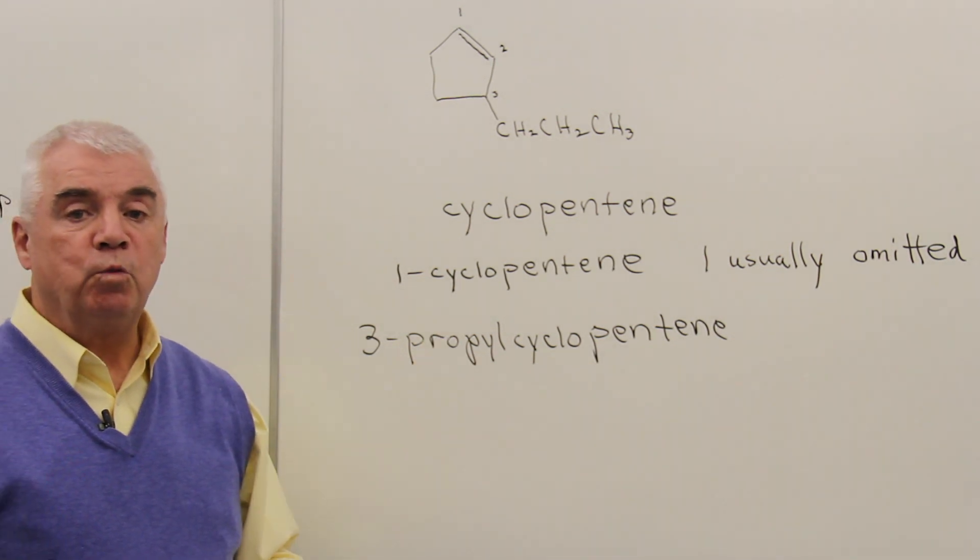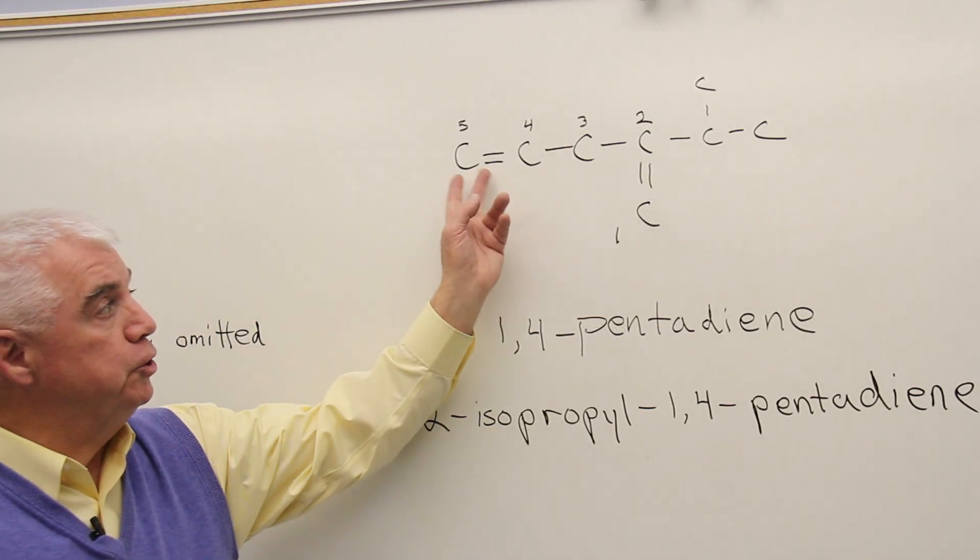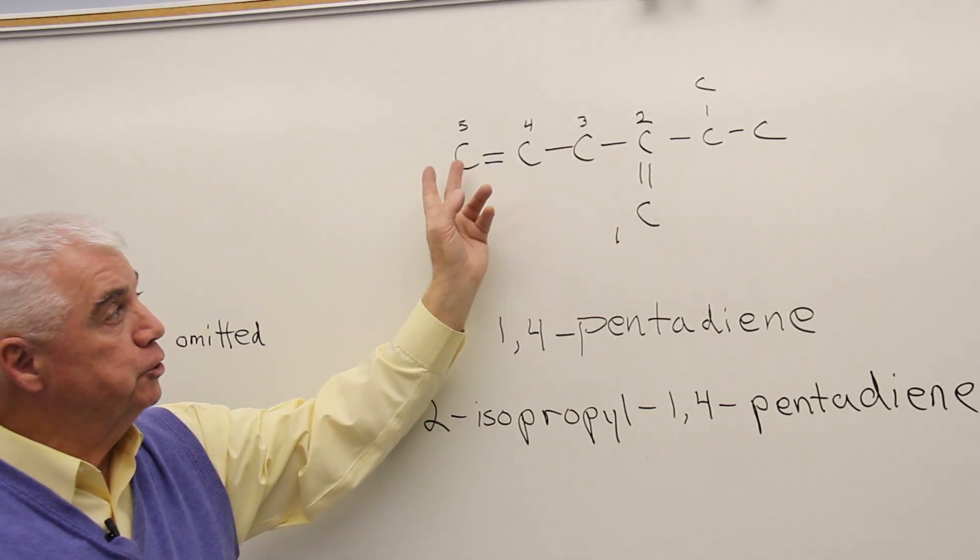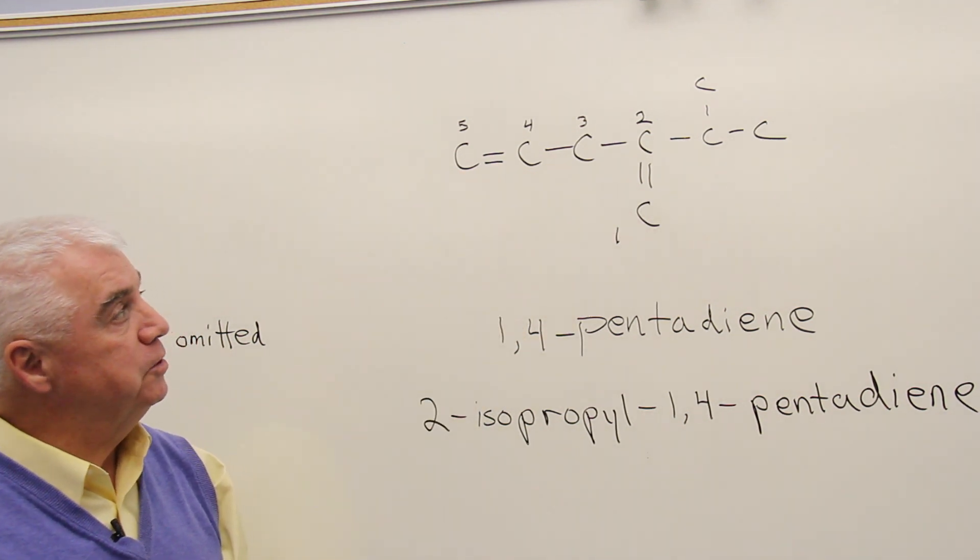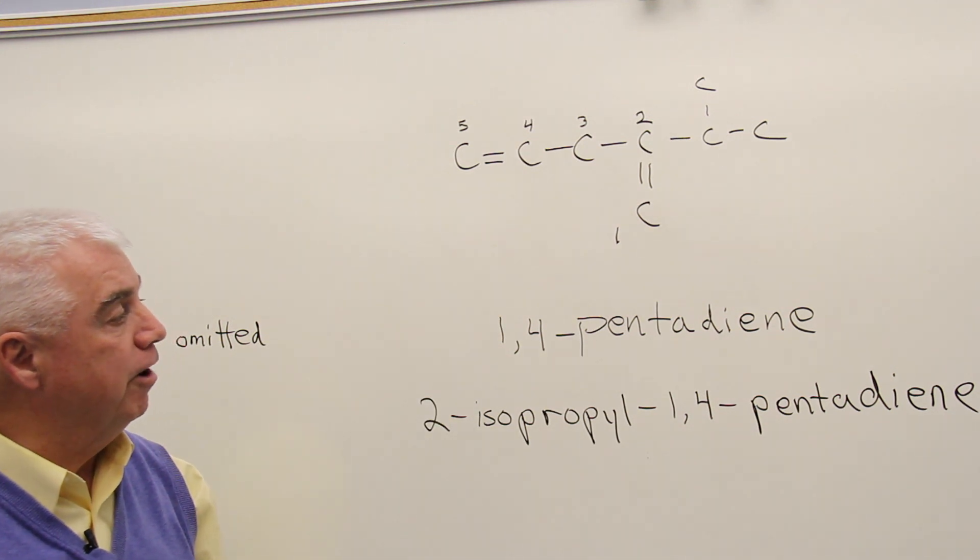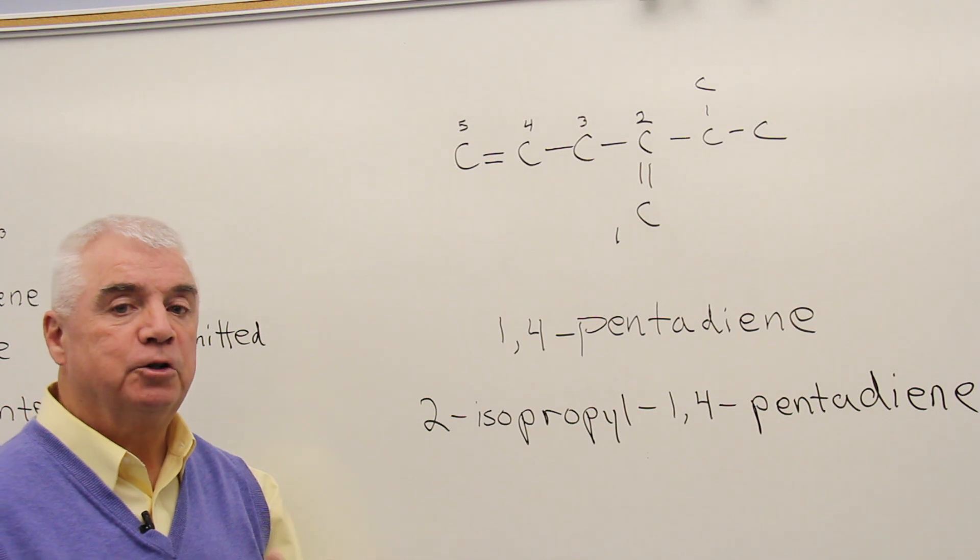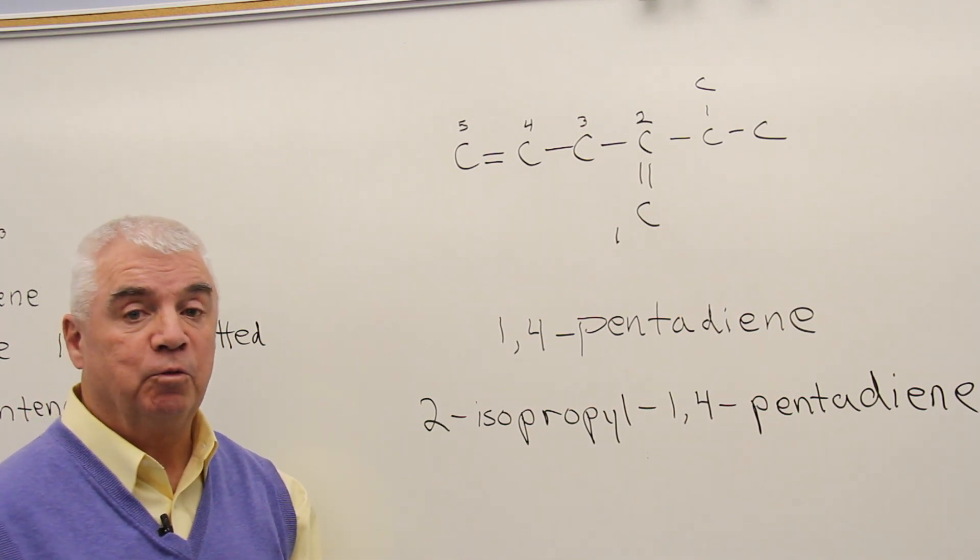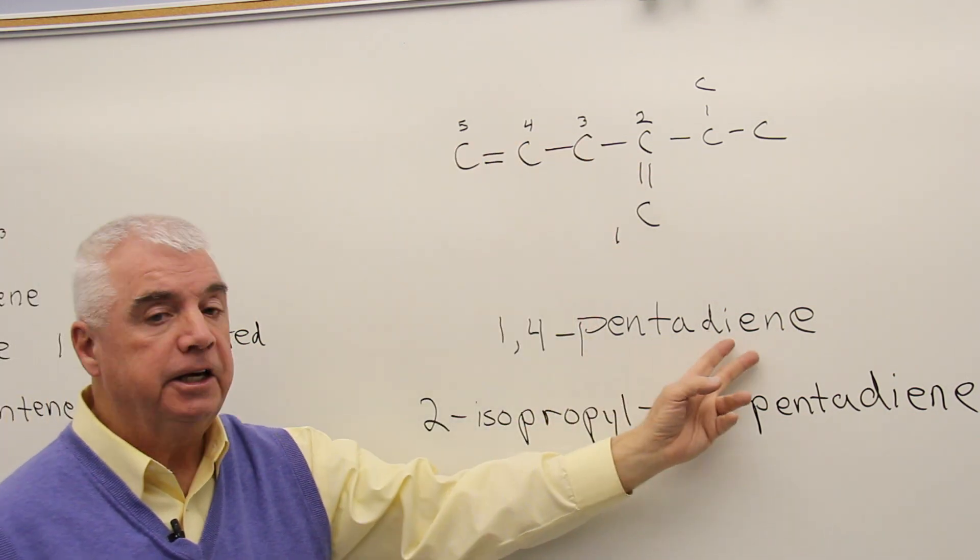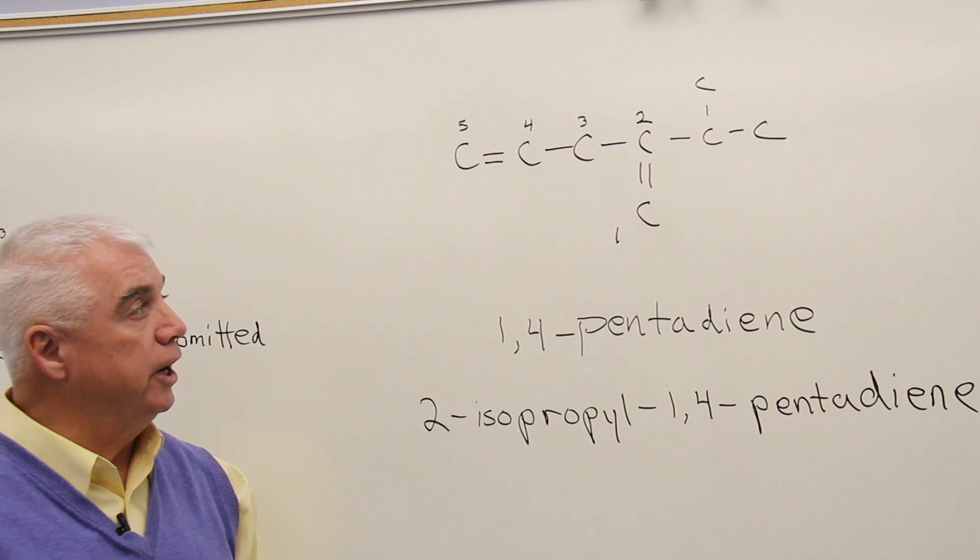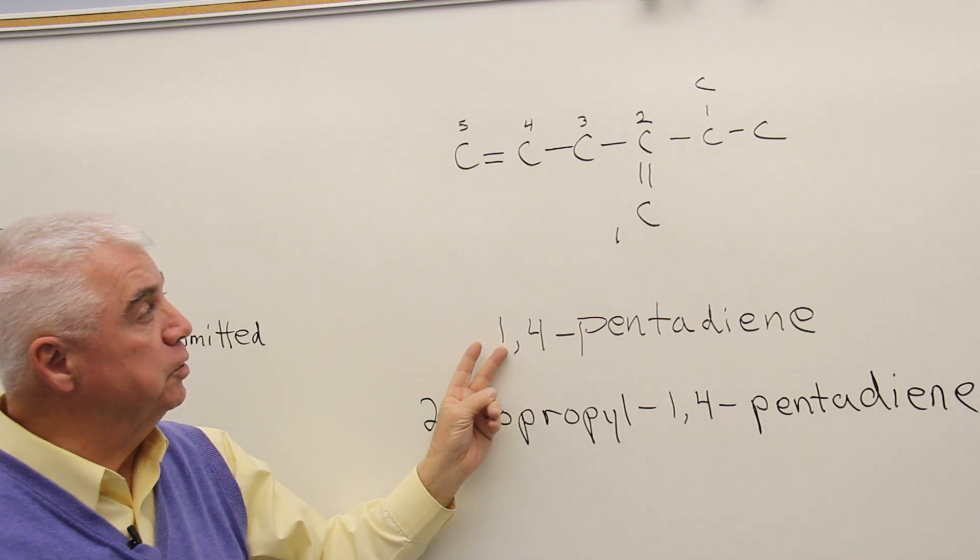It's possible to have more than one double bond within a structure. Let's look at one of those. This structure has two carbon-carbon double bonds. We'd want to make sure that the longest chain that we select as the base word includes both of those positions. And here I've numbered the carbons one through five. When two double bonds are present, it's referred to as a diene. If I had three double bonds, it would be a triene and so on. So this is a pentadiene that we've selected as the longest chain.